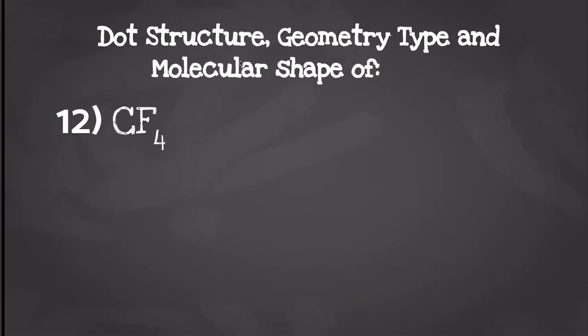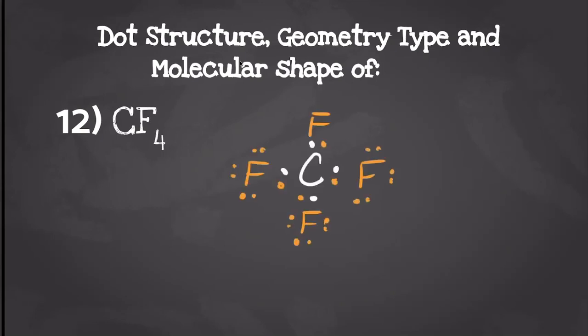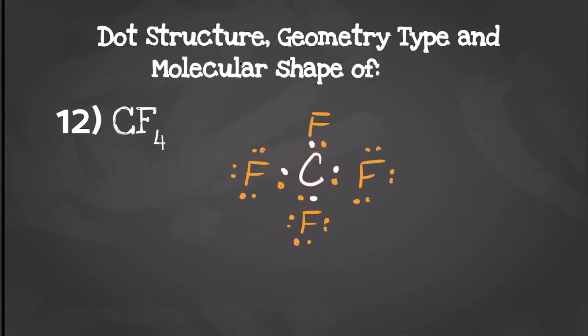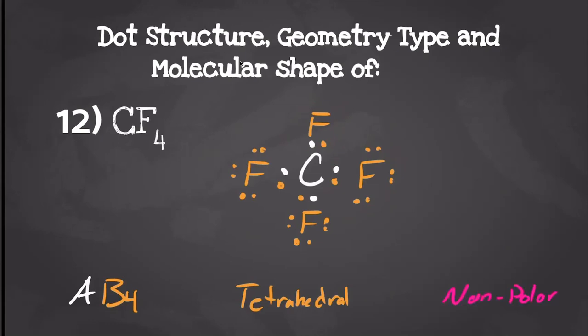For our next one we have carbon tetrafluoride. Carbon is going to have four valence electrons and each fluorine is going to have seven, so when we draw our dot structures it should look something like this. Carbon is going to have eight valence electrons and each fluorine is also going to have eight valence electrons. We have one center molecule with four things attached to it, giving us a geometry type of AB4, which — similar to methane — gives us a molecular shape of tetrahedral. And just like that example, all of the electronegativity is going to be pulling in all directions equally, so that's going to give us a non-polar molecule.